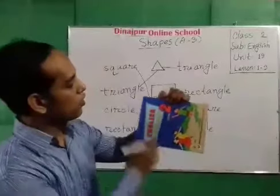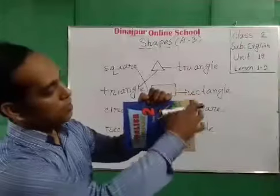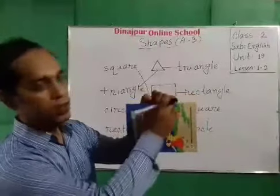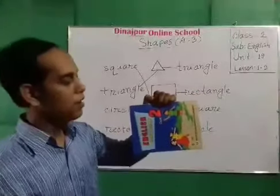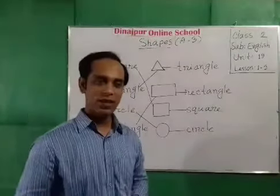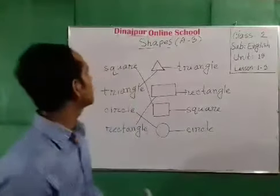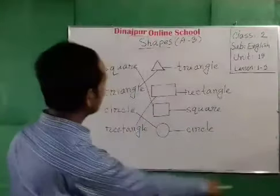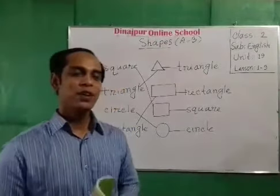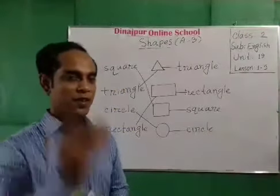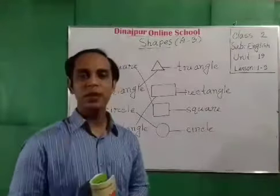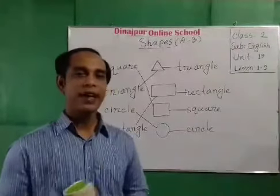This is the rectangle. The rectangle — what is this? This is the rectangle. You can see the rectangle. What is this rectangle? If you have any questions, you can read Activity A, Activity B, and Activity C.